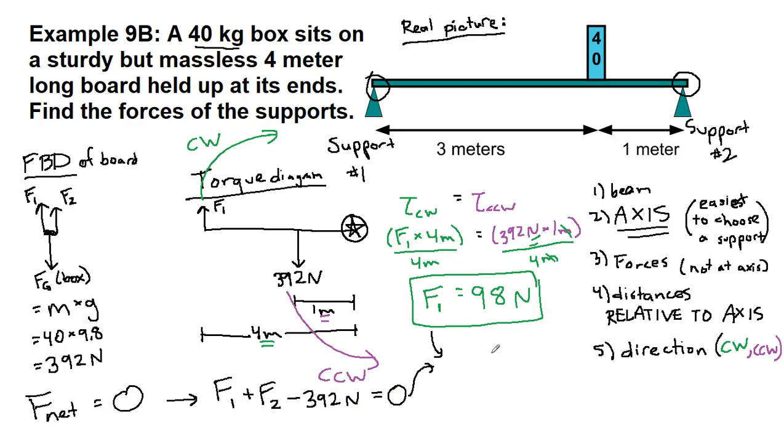So if we add in what we have here then, we have 98 plus F2 minus 392 equals zero. So the second support, the support on the right side, we would get 392 minus 98, or 294 Newtons. And that's for support number two, and support number one was the 98 Newtons. This problem is now finished with these two different forces identified.